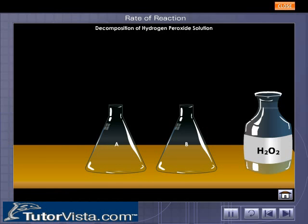The rate of decomposition of hydrogen peroxide in the presence of a catalyst may be compared with its rate in the absence of a catalyst. Two conical flasks, A and B, are taken.